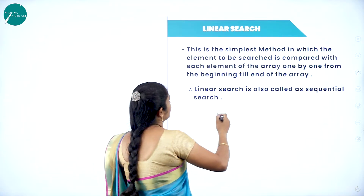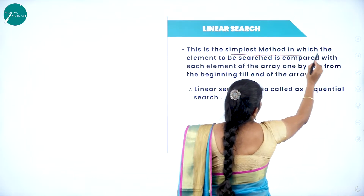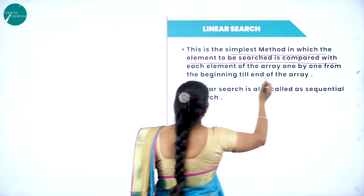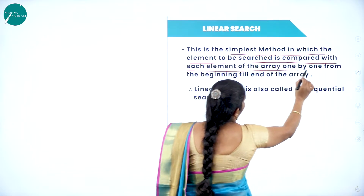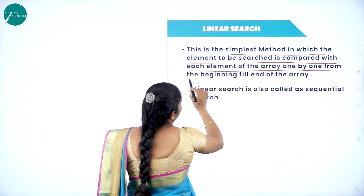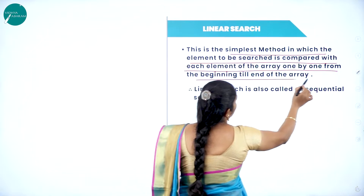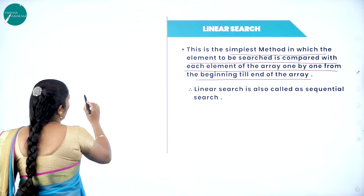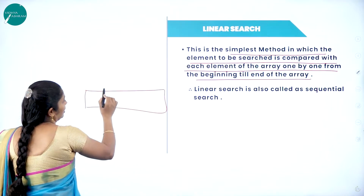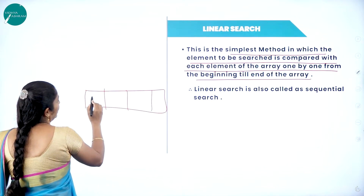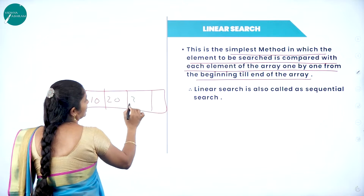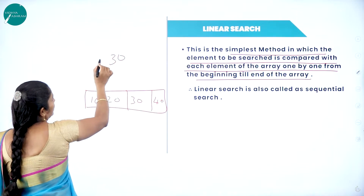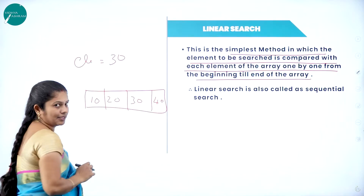Linear search is the simplest method in which the element to be searched is compared with each element of the array, one by one from the beginning till the end. Consider we have array elements: 10, 20, 30, and 40. I want to search, for example, the search element ELE = 30.